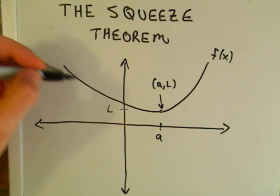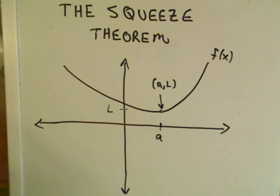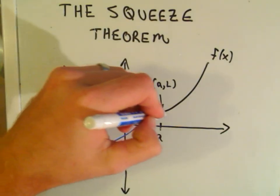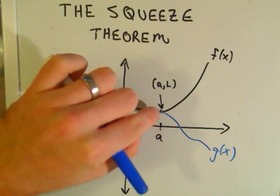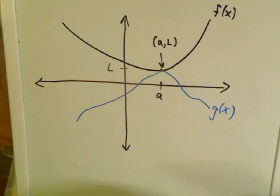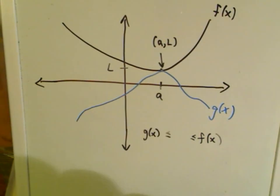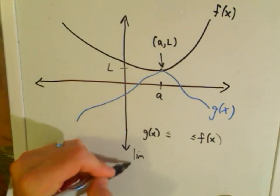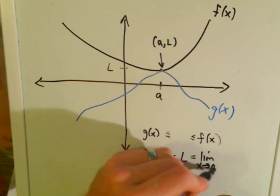So suppose in our picture we have a function f(x), and at the x-coordinate of a we have the y-coordinate of L. Suppose we have another function, let's call it g(x). Notice that at the x-coordinate of a, f(x) and g(x) intersect. So what we have is a function f(x) that's greater than or equal to g(x), and the limit as x approaches a of g(x) equals L, which is the same as the limit as x approaches a of f(x).